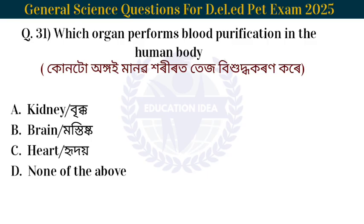Next question: Which organ performs blood purification in the human body? The organ that purifies blood in the human body is the kidney.